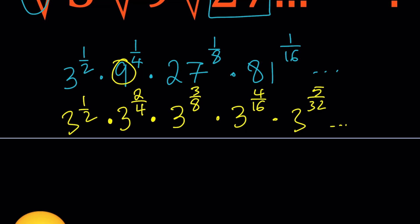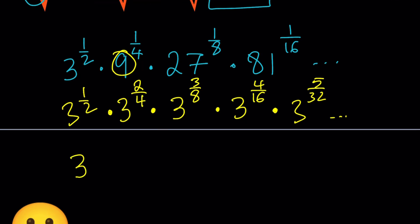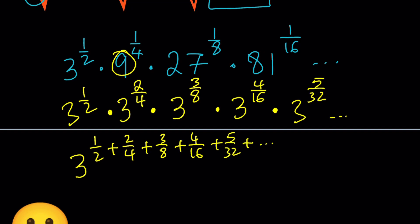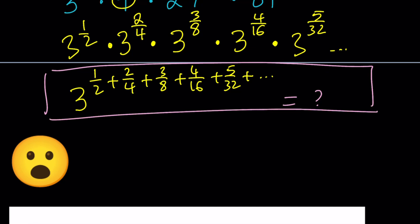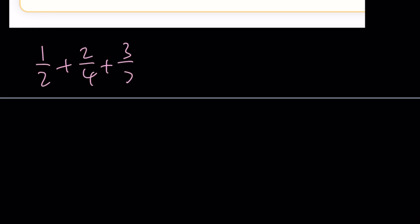Since everything is being multiplied and all bases are the same, we can add the exponents. So we need to evaluate: 1/2 + 2/4 + 3/8 + 4/16 + 5/32 + ... Again, do not simplify any fractions — you really want to see the pattern. The numerators are consecutive integers, and the denominators are powers of 2. Let's set this aside and evaluate that exponent sum first.